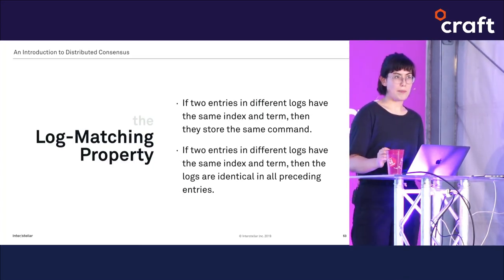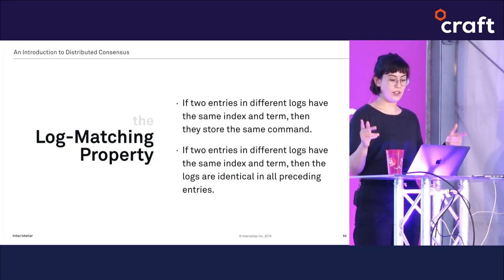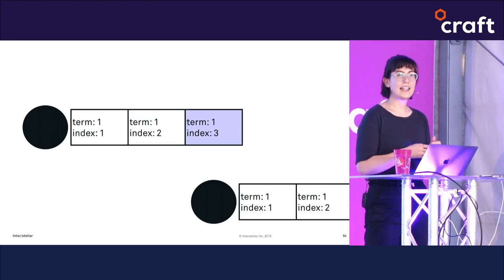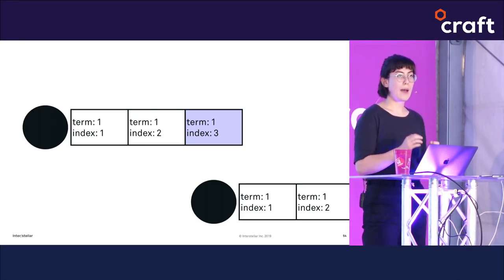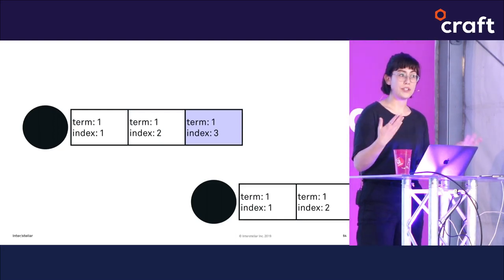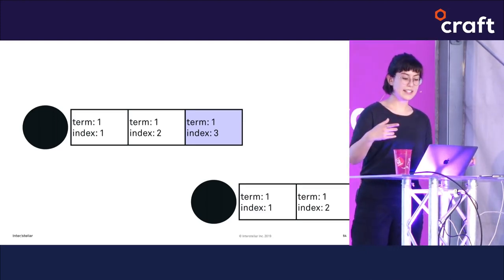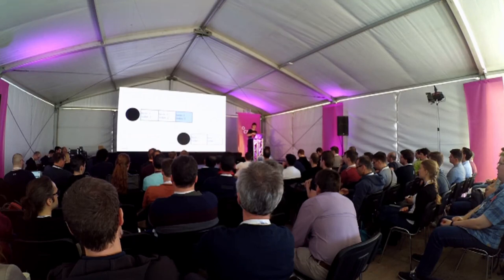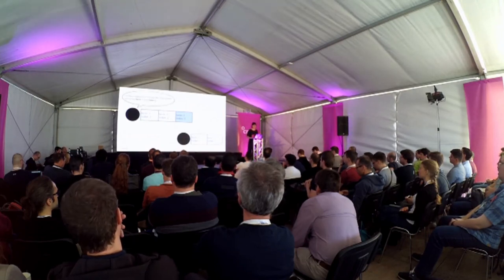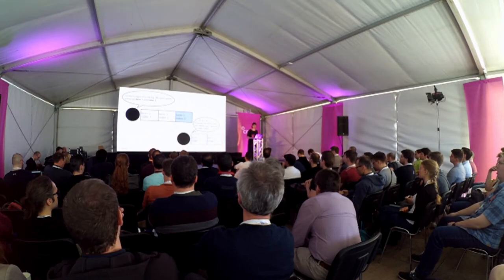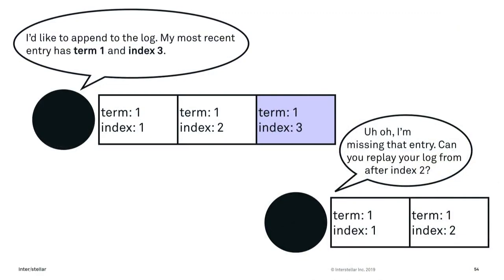The second part of the log matching property says that if two entries in different logs have the same index and term number, then the logs are identical in all preceding entries. Unlike the first invariant, this doesn't follow naturally — it has to be guaranteed by a consistency check that happens every time the leader tells followers to add a new log entry. When the leader wants followers to append a new entry, it also sends the index and term number of the last committed entry.